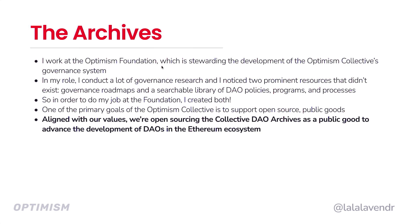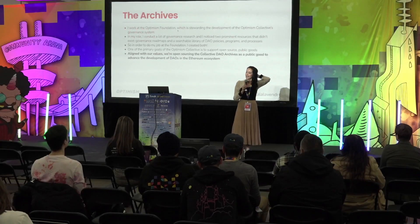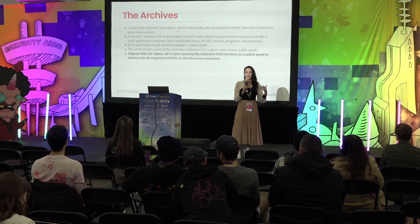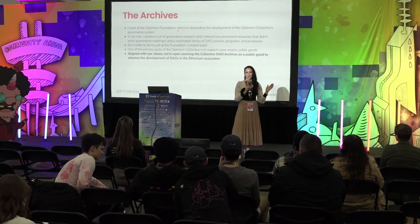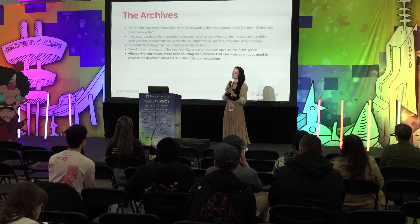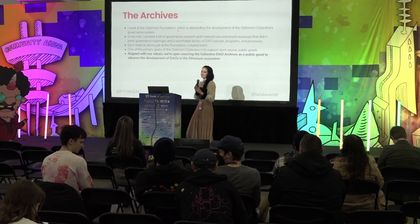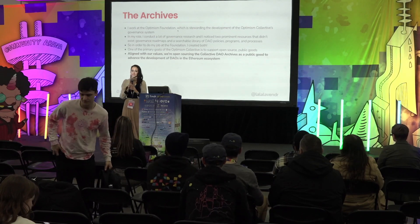I work at the Optimism Foundation, which is stewarding the development of the Optimism Collective's governance system. In my role, I do a lot of governance research and I realized that there were two key resources that I was missing. The first were governance timelines, which most DAOs don't publish as roadmaps, and the second was a library where I could search policies, programs, and procedures across DAOs. So in order to do my job at the Optimism Foundation, I created these resources.